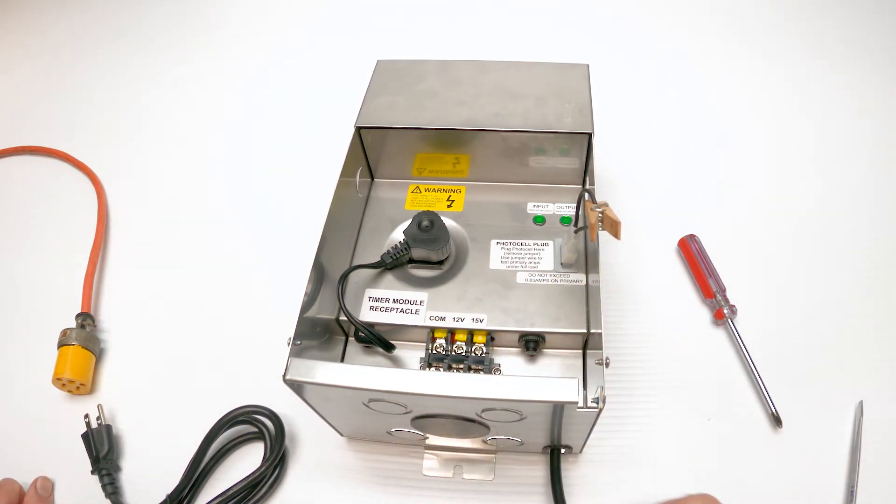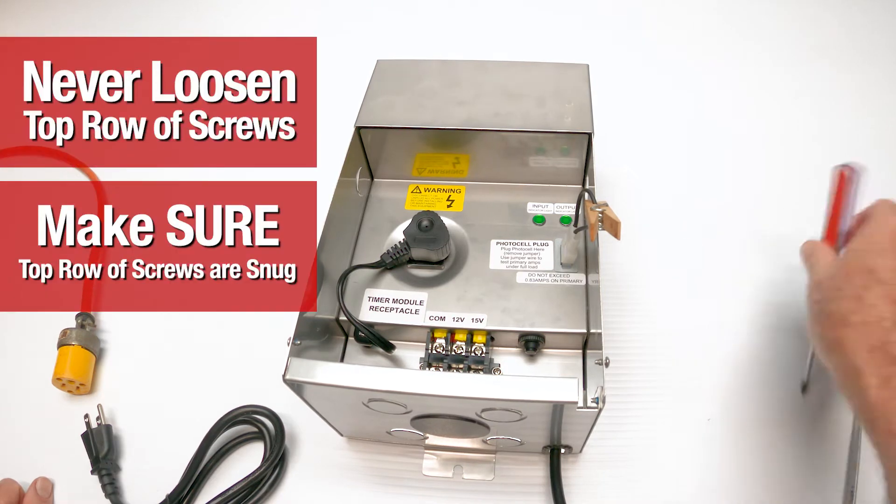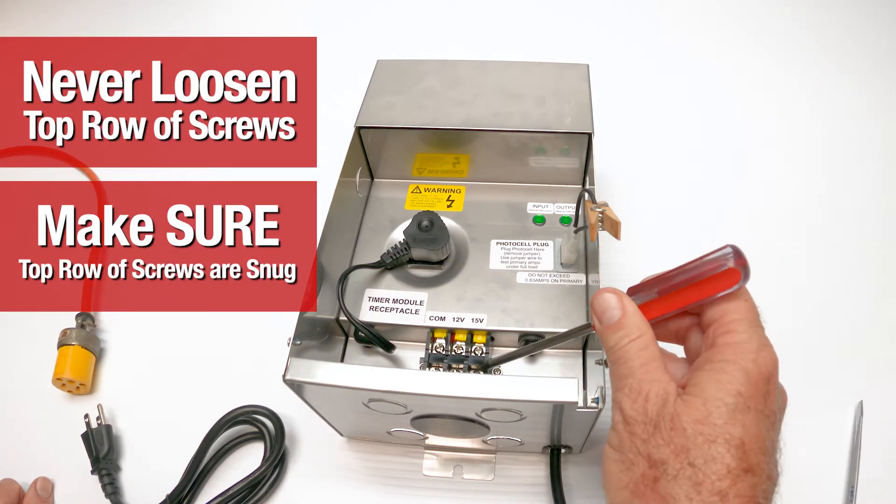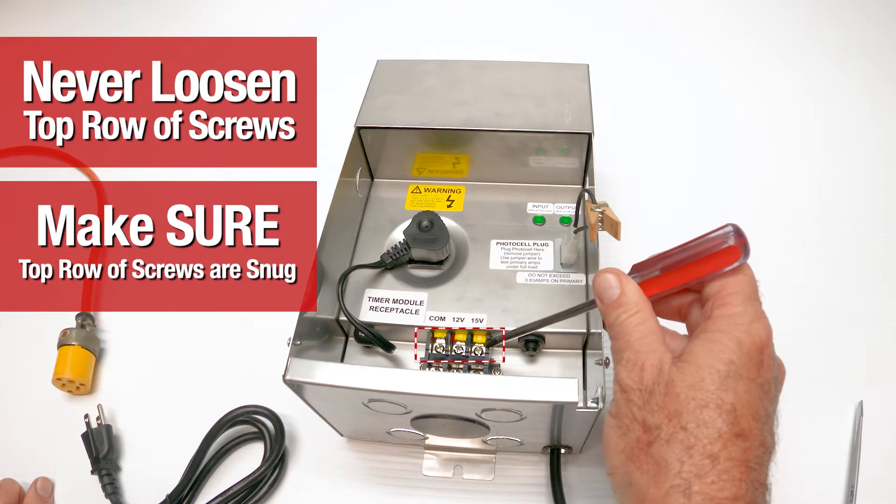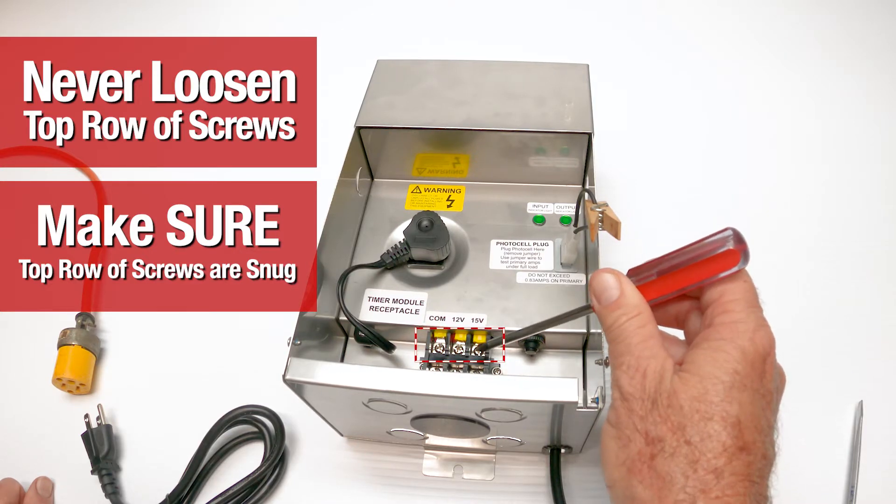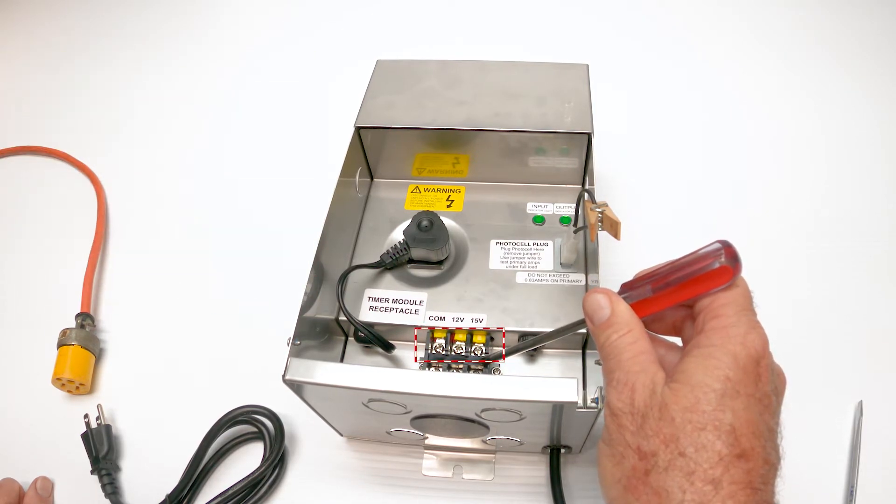Down here are the terminal blocks. There's two sets of screws. You can see them here. This is the top set and the lower set. The top set you should never touch. Don't unscrew the top set. All your terminations will happen on the lower set.